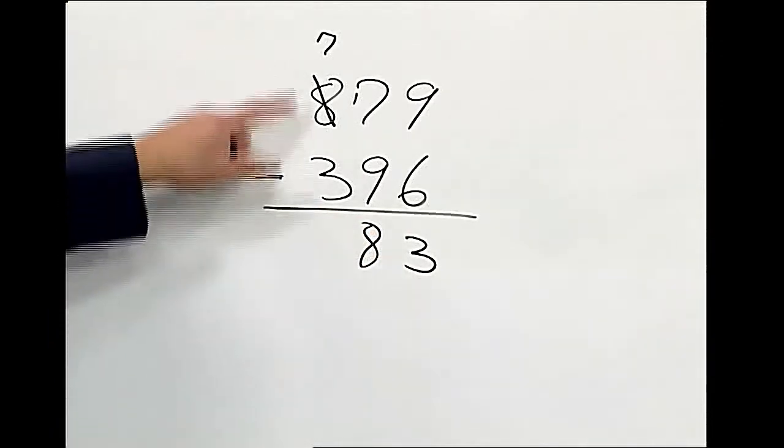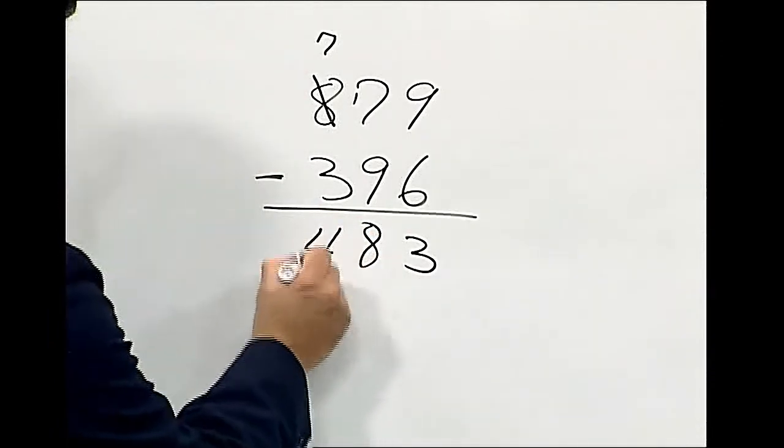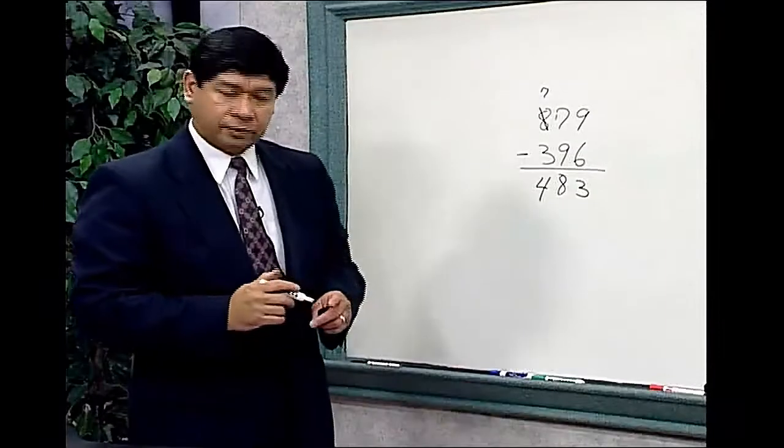And let us subtract three from seven, and we have four. So the solution to this would be 483.